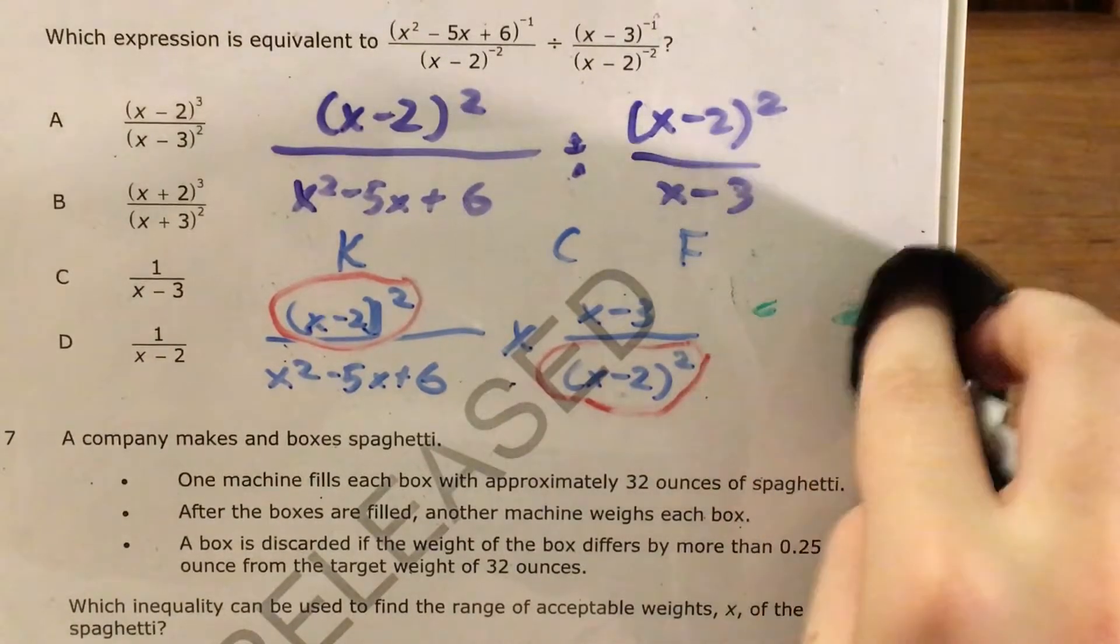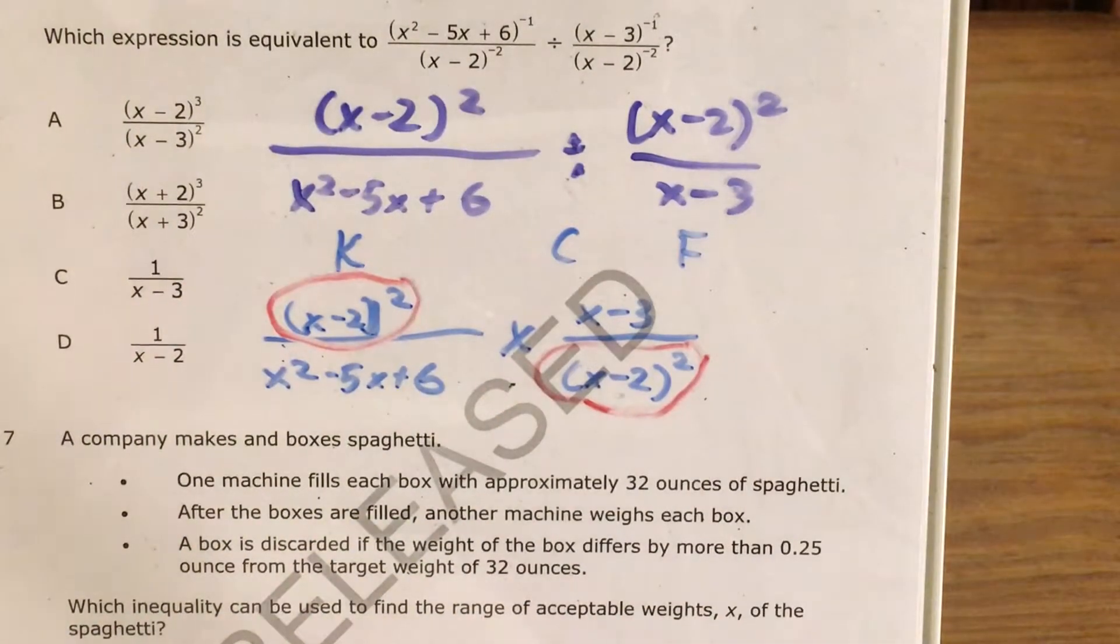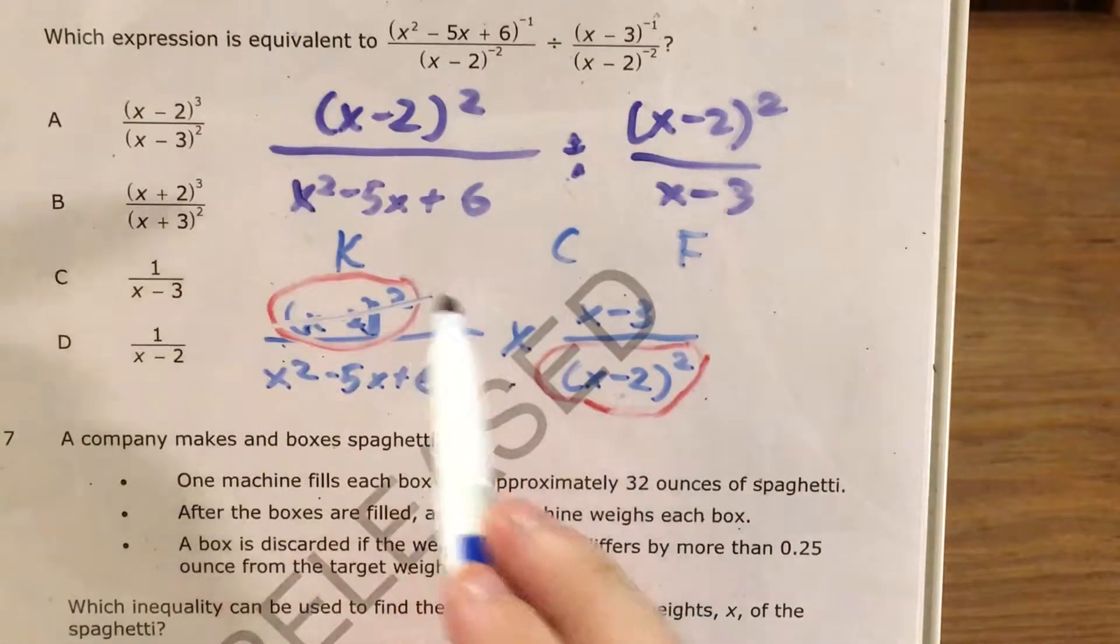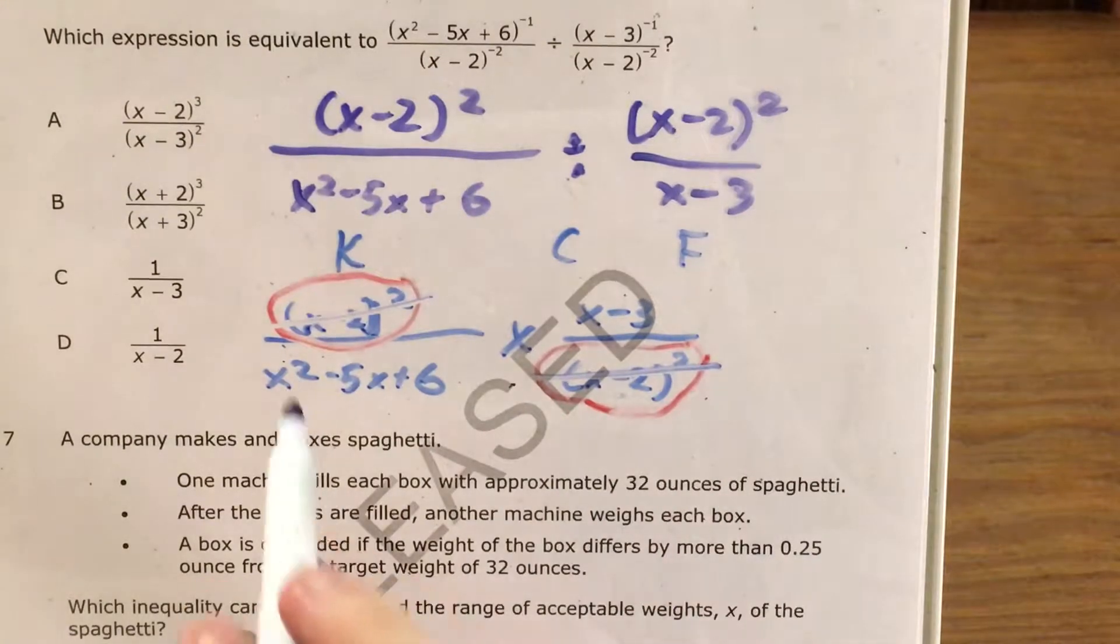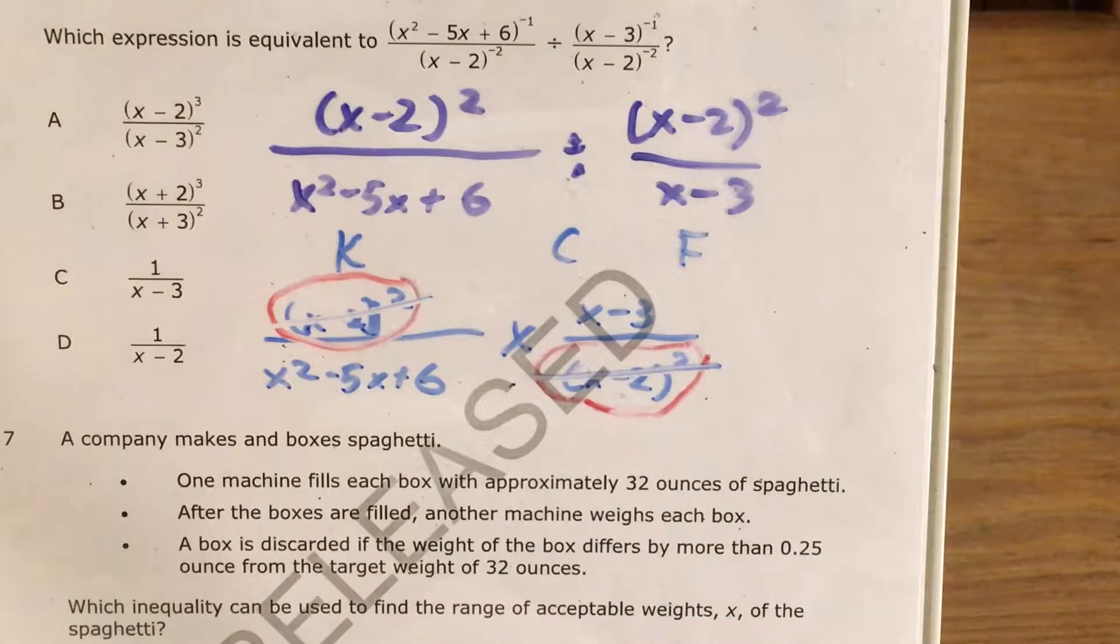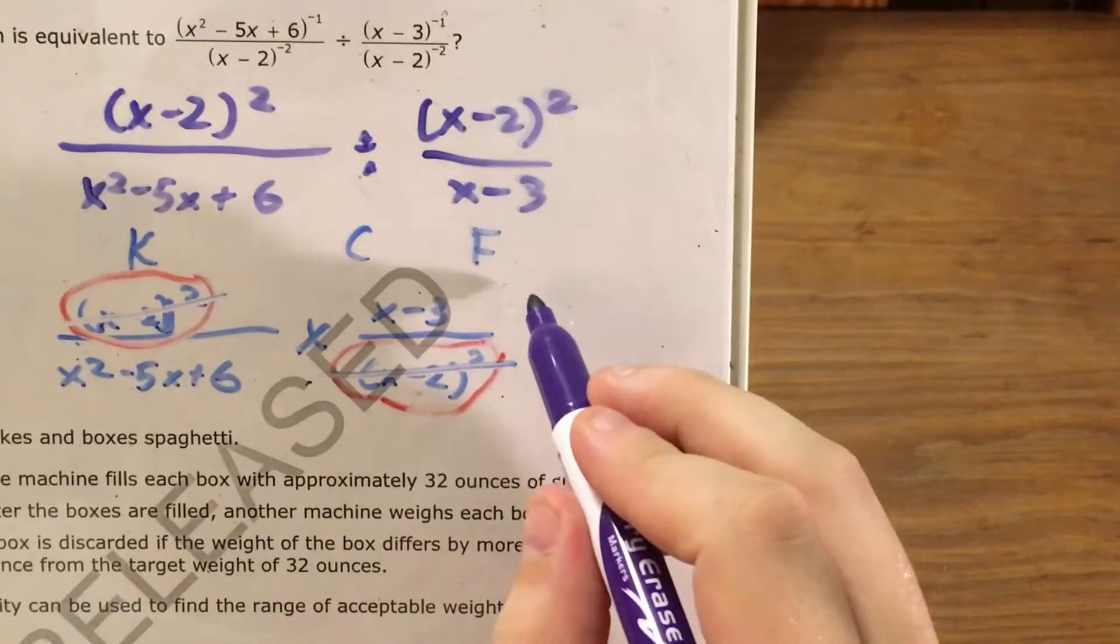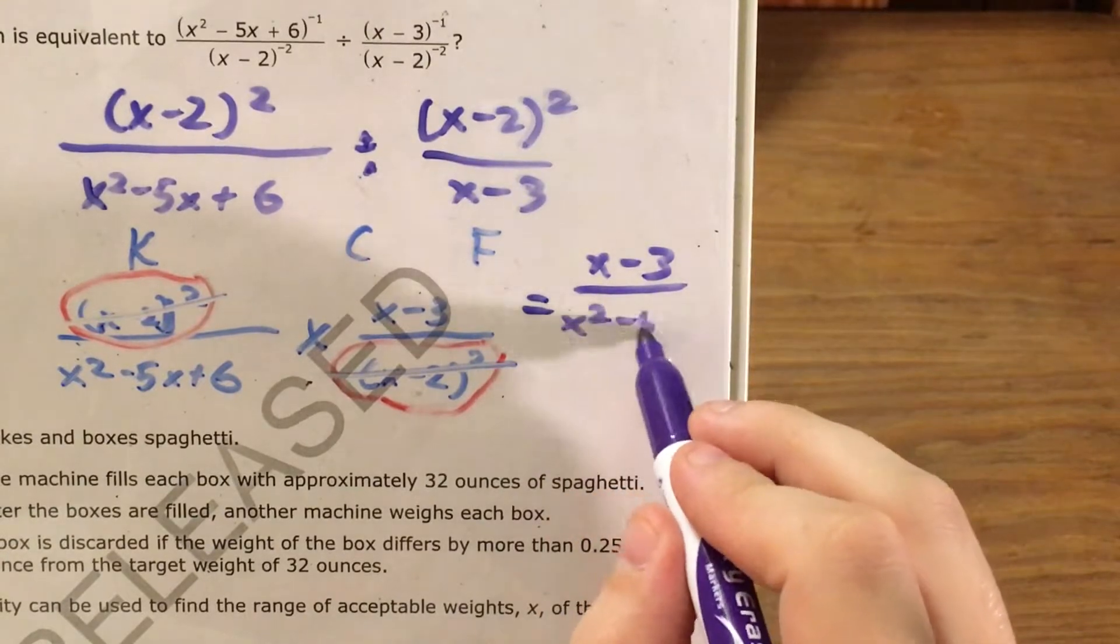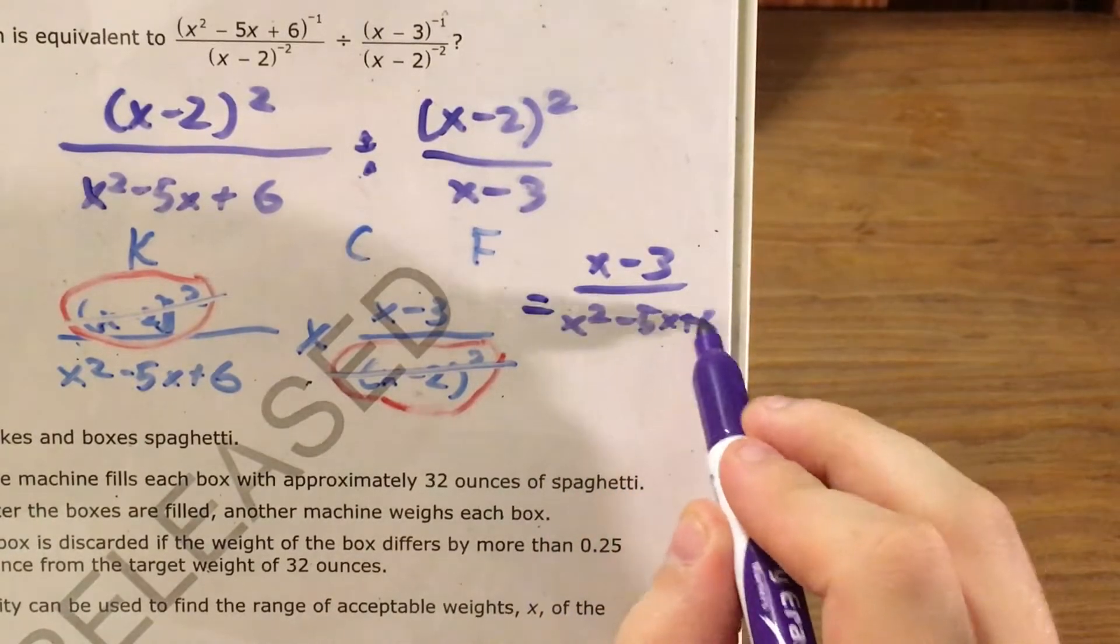So I'm gonna do that same thing here. And I'm going to say that since x minus 2 squared appears in both the top and the bottom, I can cross it out. So there goes x minus 2 squared, there goes x minus 2 squared, and this is gonna leave me with x minus 3 all over x squared minus 5x plus 6.